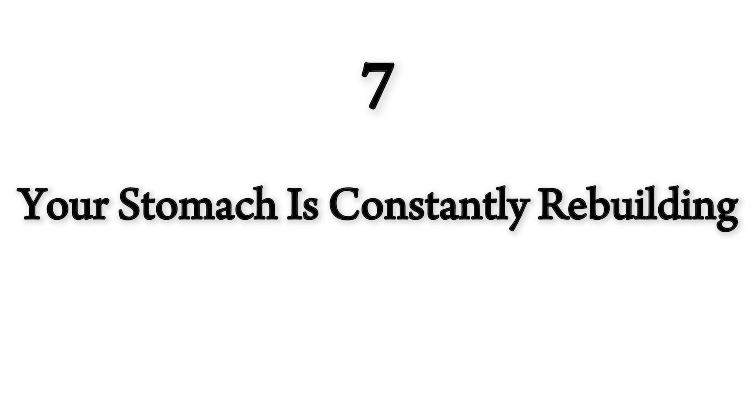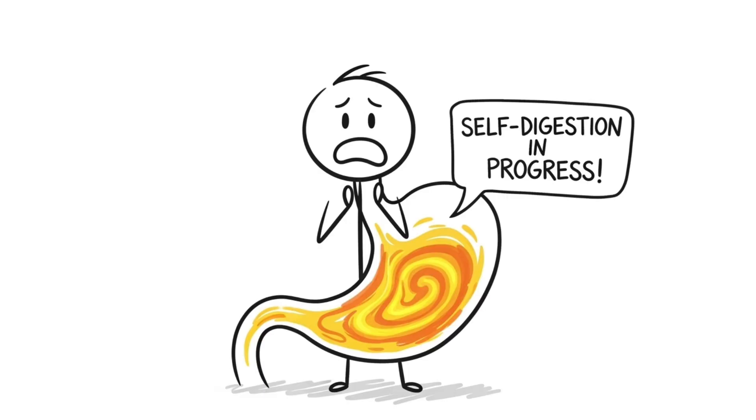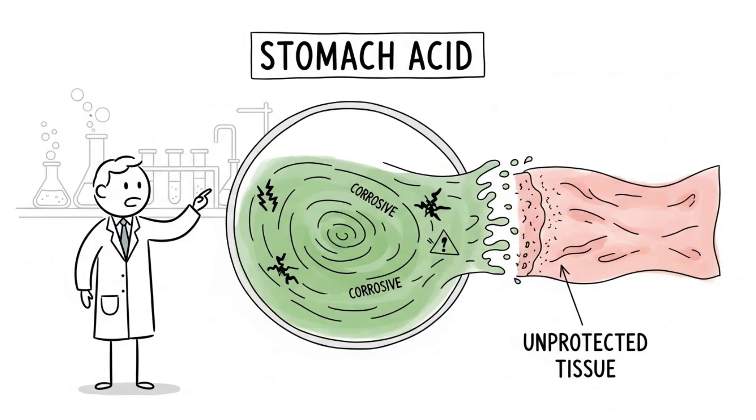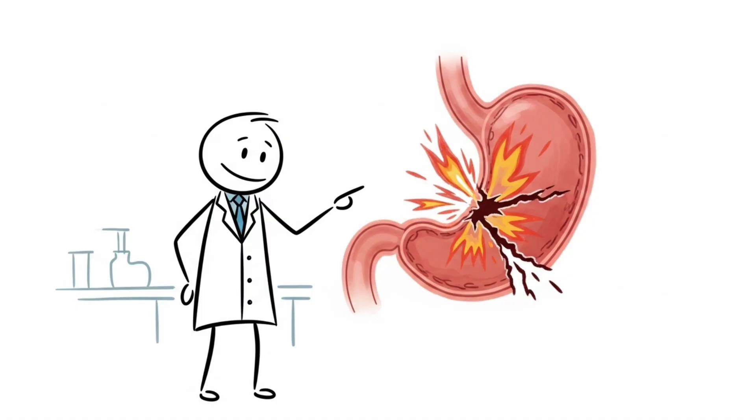Number seven, your stomach is constantly rebuilding. Your stomach is trying to digest itself right now, and the only way to survive is to rebuild. It's because the acids inside your stomach are so corrosive that without constant protection, they would burn through your own tissue, and your stomach lining would consume you from the inside out.